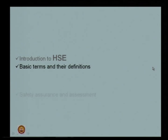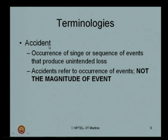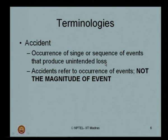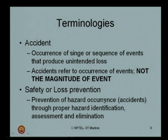Now we will see some basic terms and definitions in HSE. What is an accident? It is defined as the occurrence of a single or sequence of events that produce unintended loss. Accidents refer to the occurrence of events only — not the magnitude of the event. Safety or loss prevention is defined as the prevention of accident occurrence through proper hazard identification, assessment and elimination.